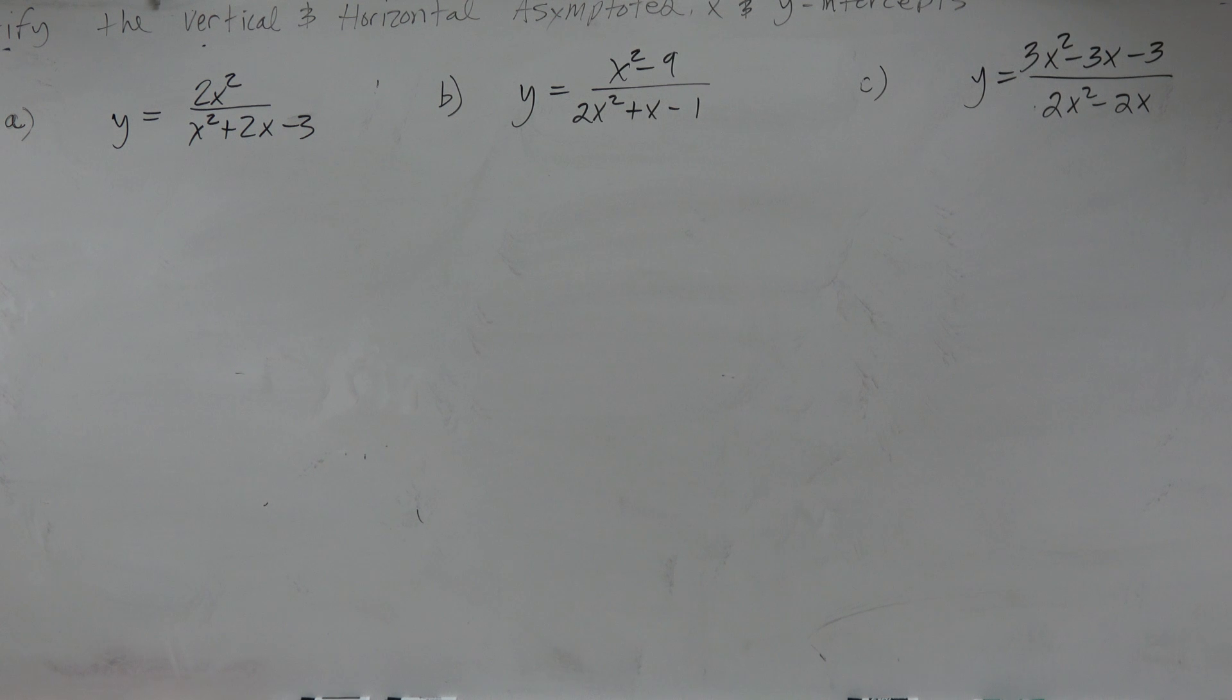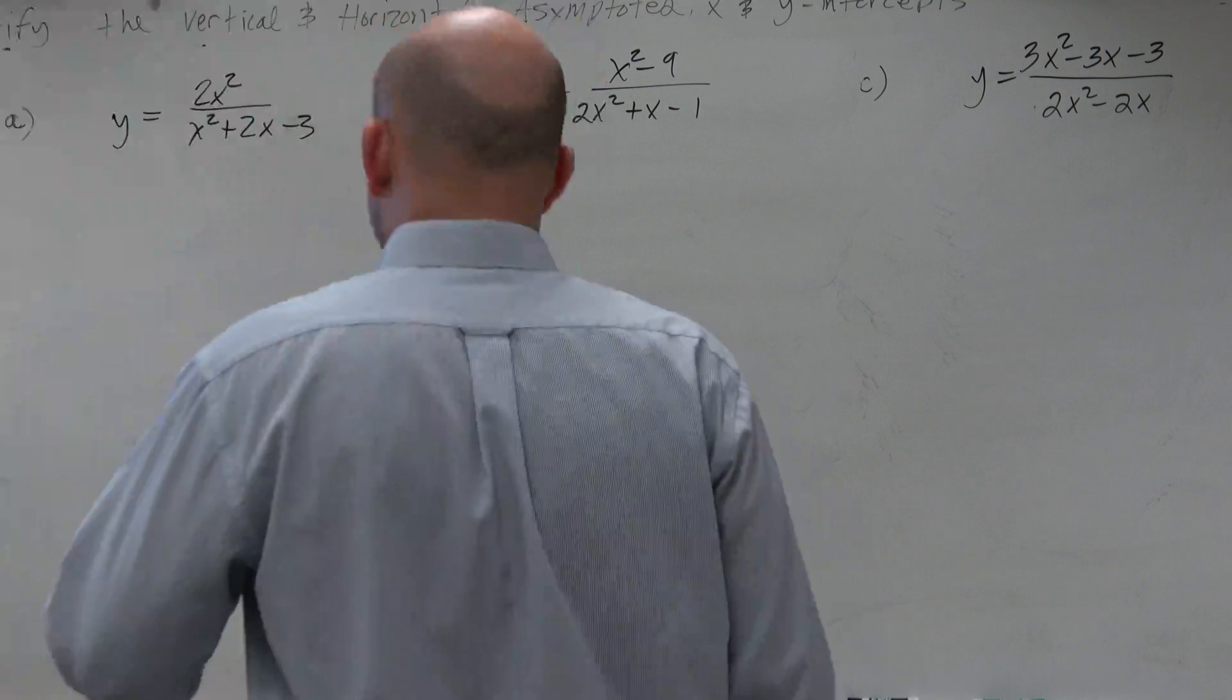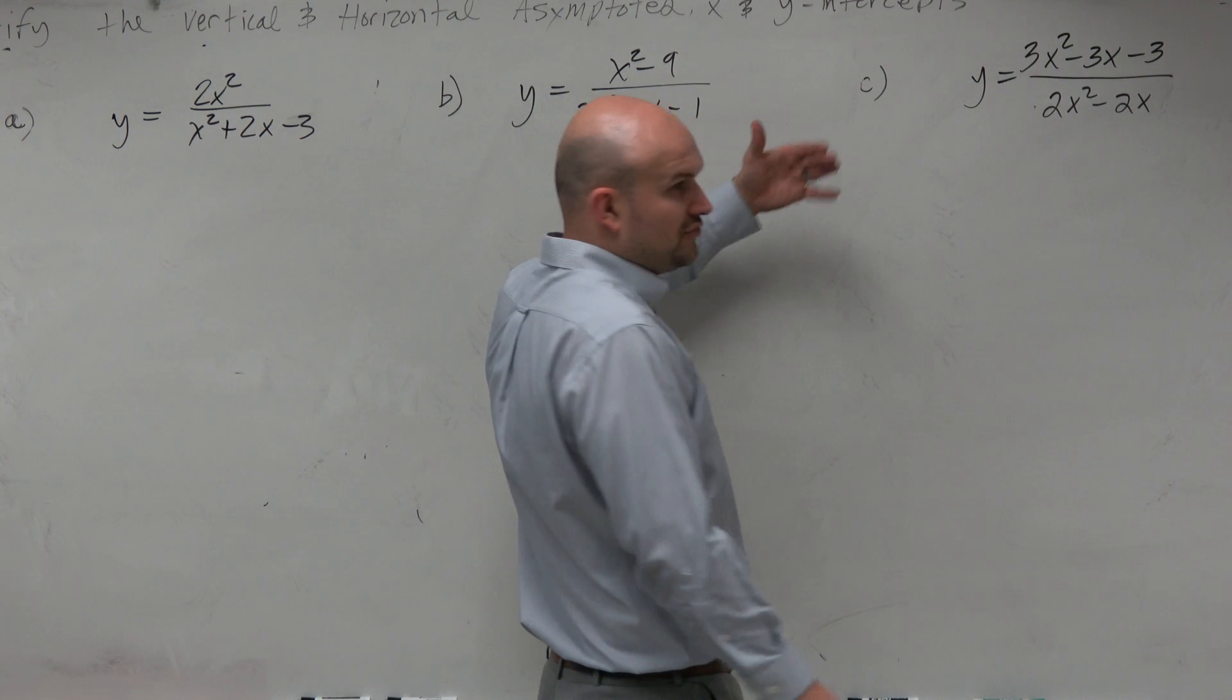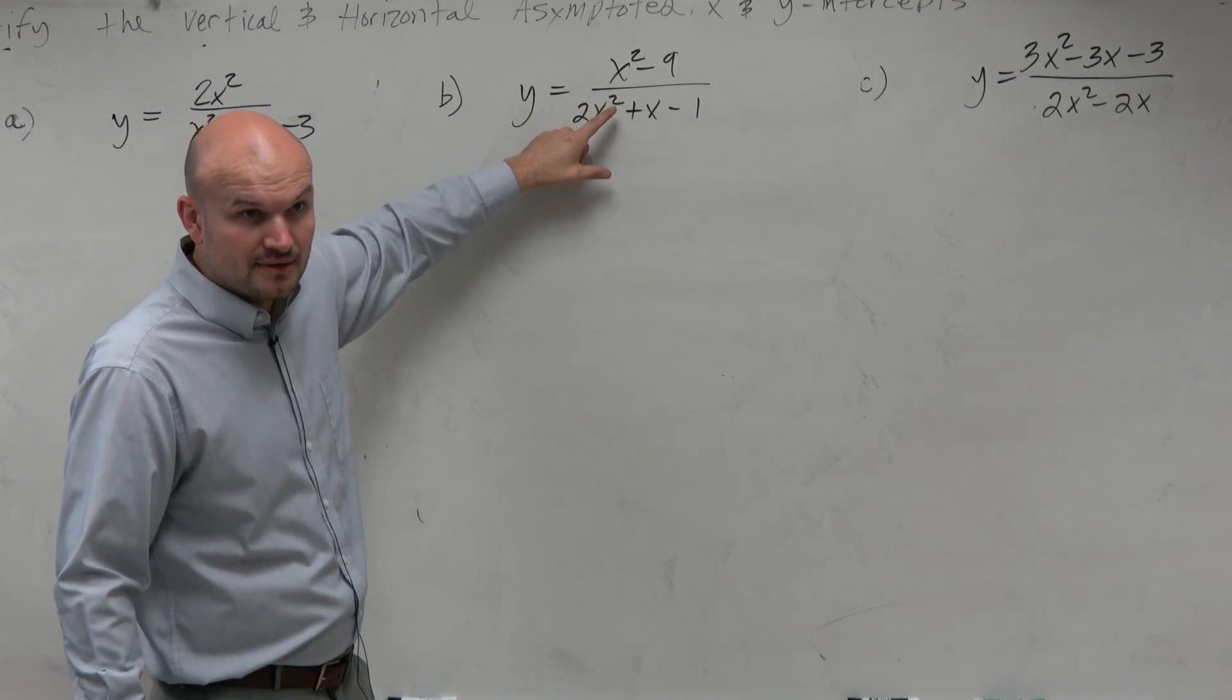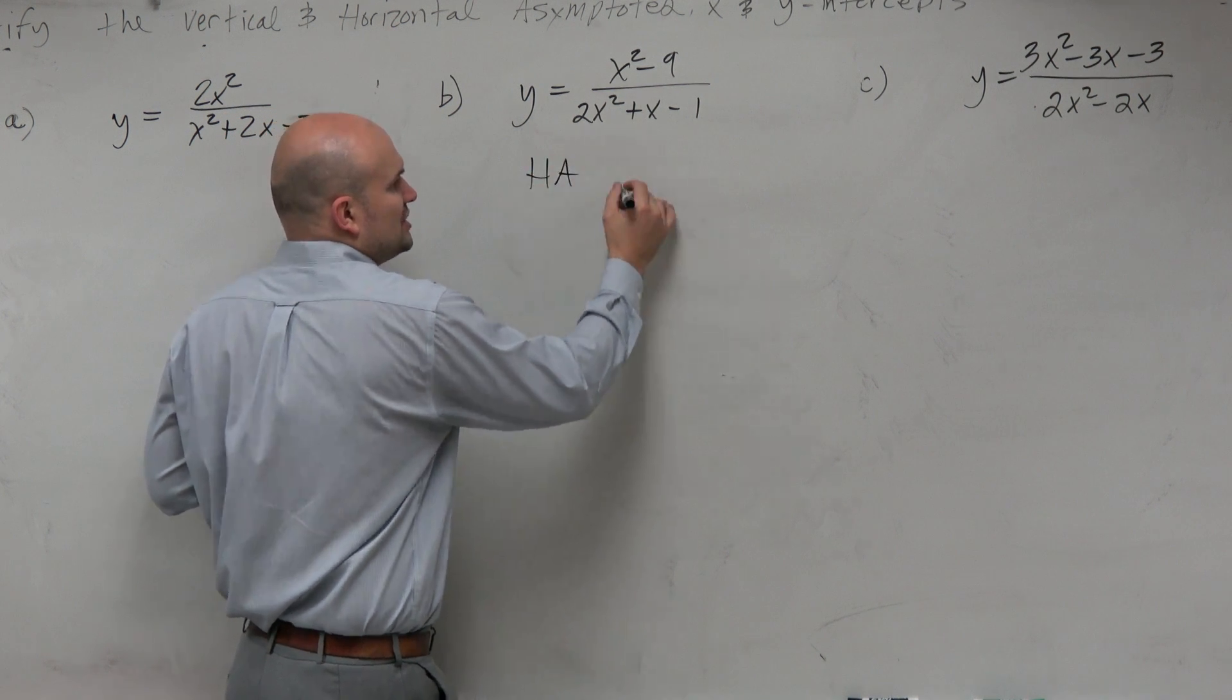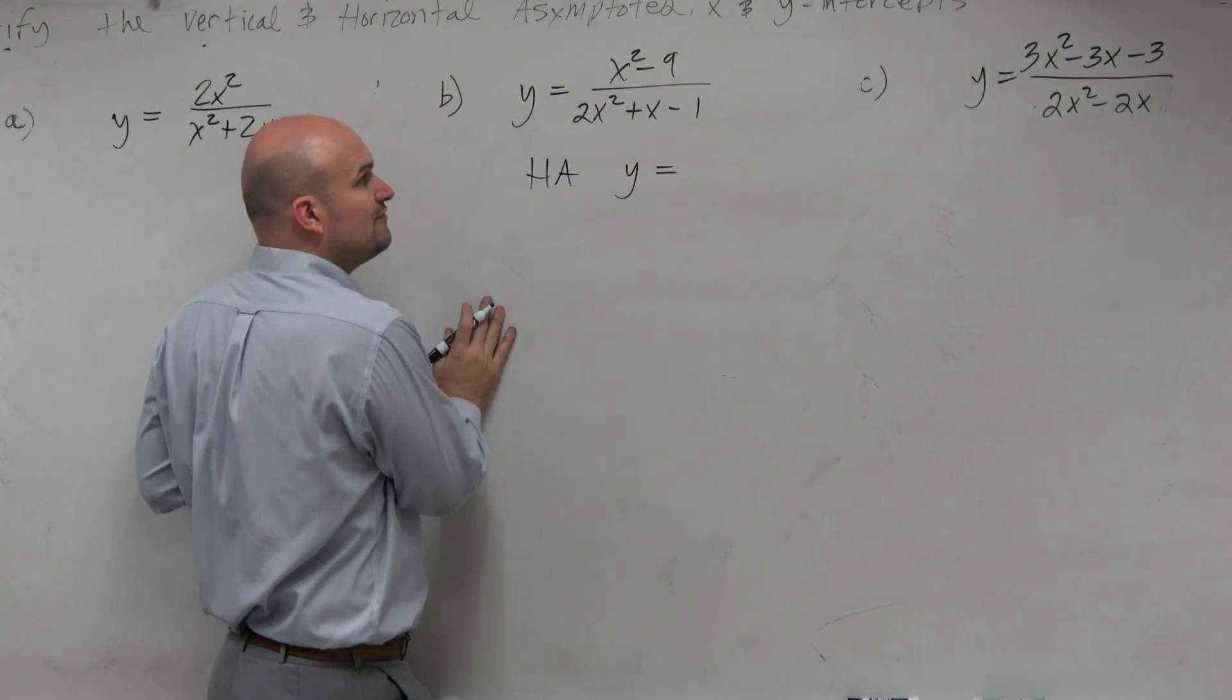Exactly the same, right? Now, I didn't mean for them to all be 2, but it doesn't matter if they're 2, 3, or 4. But whenever the degree in the numerator is equal to the degree in the denominator, then the horizontal asymptote is just a ratio of your leading coefficients.